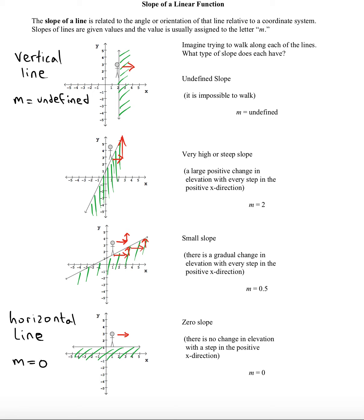So these are just a couple things to remember. Vertical lines have an undefined slope, whereas horizontal lines have a slope of 0.